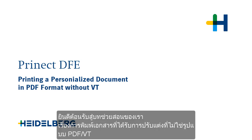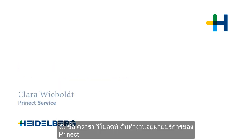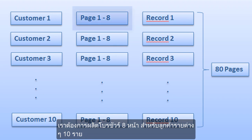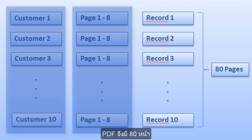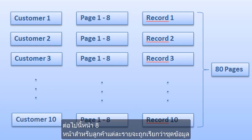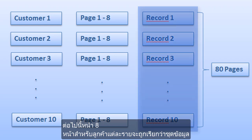Welcome to our tutorial on printing personalized documents without PDFVT. My name is Clara Wiebold and I work for Prinect Service. We want to produce an 8-page flyer, each for 10 different customers. The PDF has 80 pages for that reason. We will refer to the 8 pages for each customer also as a data record.